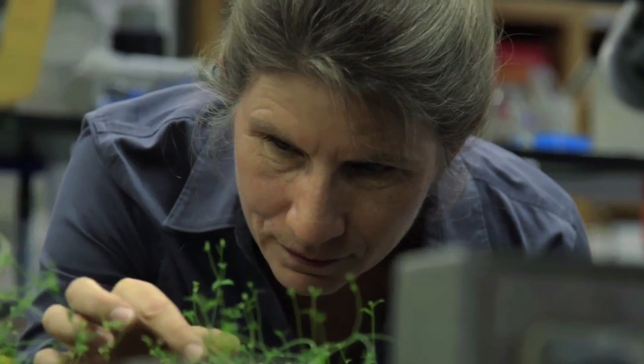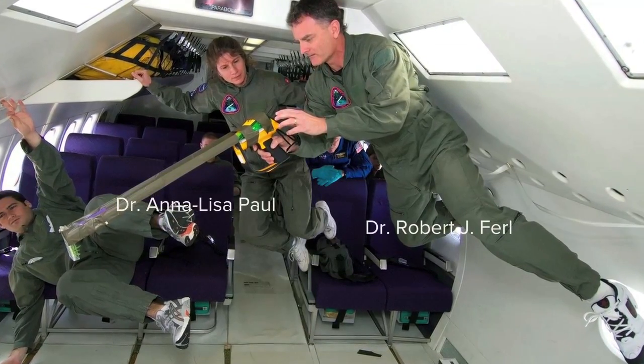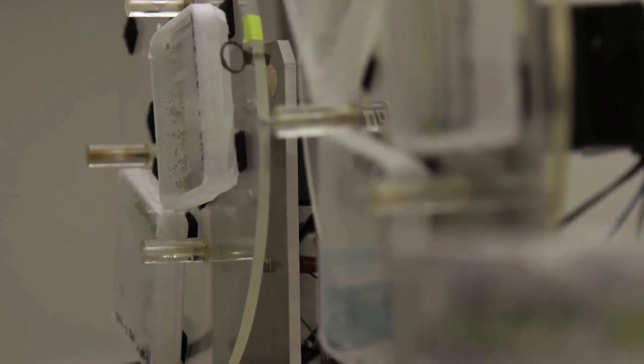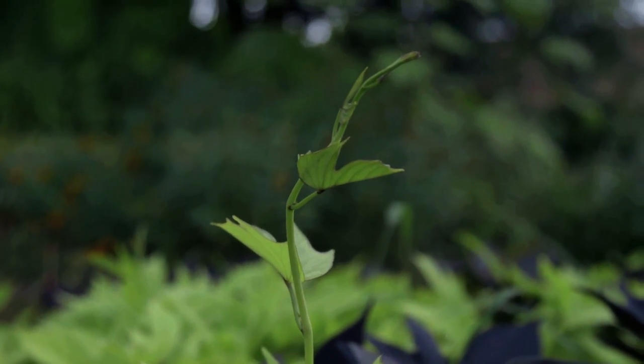Plant biologists Anna-Lisa Paul and Robert Furl at the University of Florida Gainesville Space Plants Lab grow the humble weed Arabidopsis on purpose to find clues about how plants behave in extreme conditions, such as how do plants grow differently on orbit, or on the moon, or on Mars?